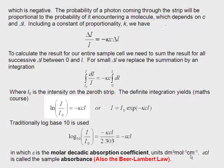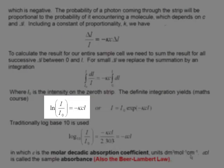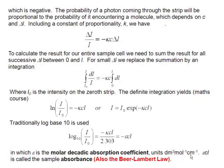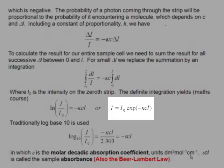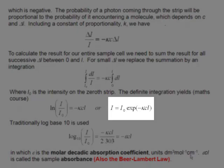And that gives you the equation ln(I/I₀) is equal to minus κcl, which we can rewrite as an exponential function, I is equal to I₀e^(-κcl).